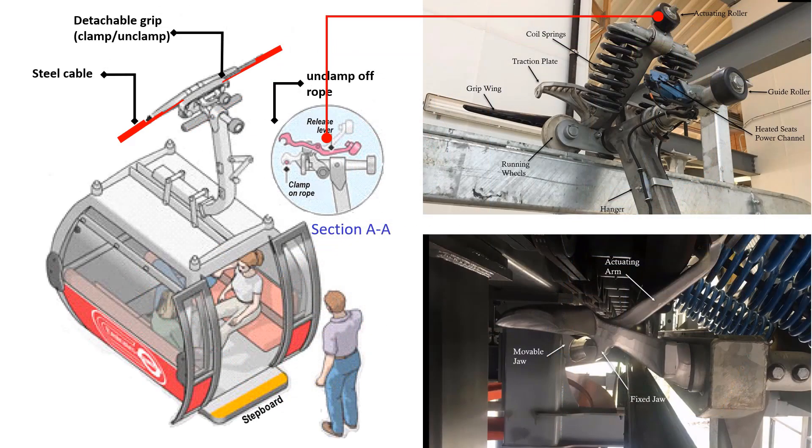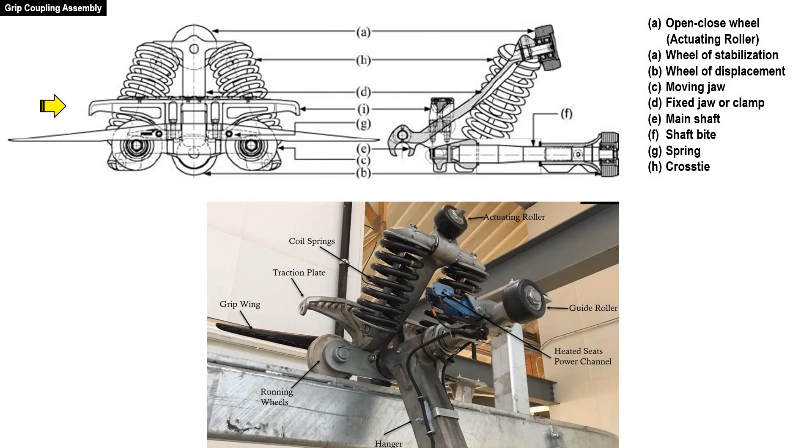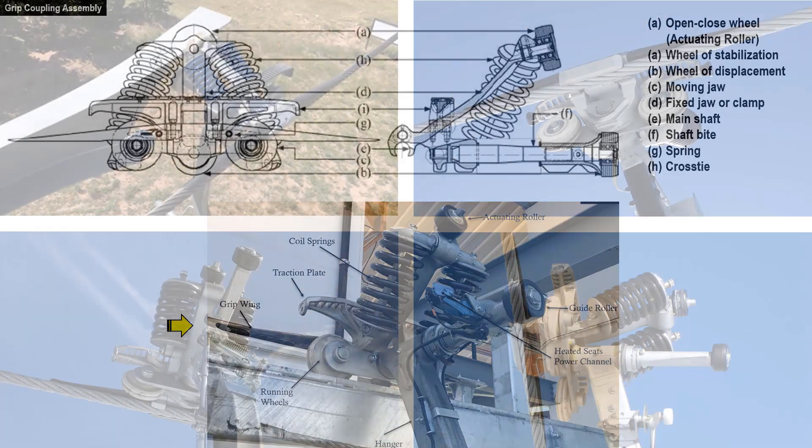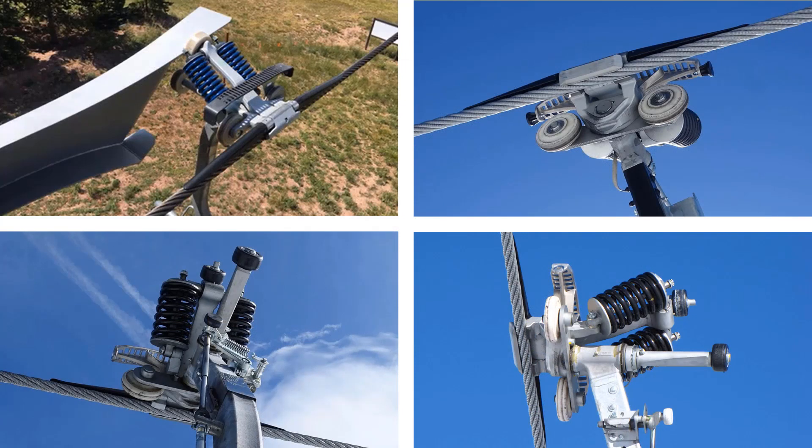When the cabin enters the station, its actuating roller will roll over an actuating rail and push it down. The pushing down will open the movable jaw, detaching the grip from the cable. Similarly, when going out of the station, the actuating roller will roll over an actuating rail and push it up to close the movable jaw, attaching the grip to the cable. These are its detailed parts of the grip coupling assembly. This is a photo of the grip assembly showing its parts. These are more views of the grip assembly showing the grip clamping on the cable during travel between stations.